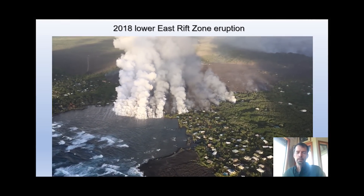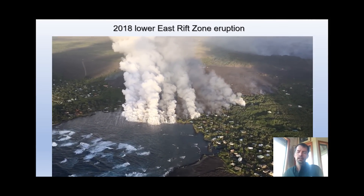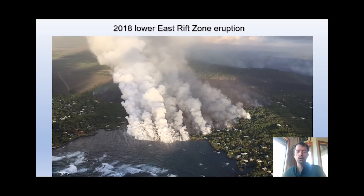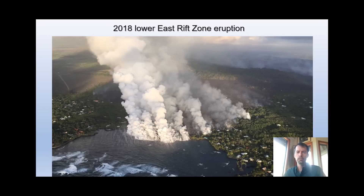That Fissure 8 flow, the one where we were at the channel edge, within a week migrated to the coast and hit the Kapoho area. Kapoho had a number of subdivisions - Vacation Land, Kapoho Farm Lots, Kapoho Beach Lots - and all of these subdivisions were totally covered by the flow. Eventually the lava actually filled in the bay as well. So most of this area in this frame is totally covered by lava now. There were hundreds of homes destroyed in the span of just a few days. As you can imagine, it was really tough to see this level of destruction in the community.